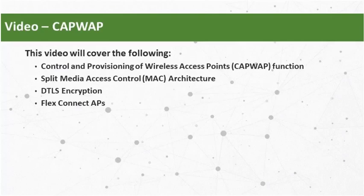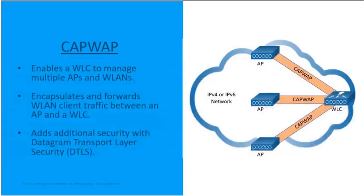Let's discuss CAPWAP, Control and Provisioning of Wireless Access Points. CAPWAP is an IEEE standard protocol that enables a wireless LAN controller to manage multiple access points and wireless local area networks. CAPWAP is responsible for the encapsulation and the forwarding of wireless LAN client traffic between an access point and a wireless LAN controller. CAPWAP establishes tunnels on UDP ports 5246 and 5247.